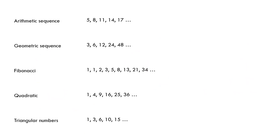Changing topic to sequences. Arithmetic sequences, sometimes called linear sequences, are related to straight lines. An arithmetic sequence increases or decreases by the same amount each time. Looking at this particular sequence, the term-to-term rule is to add on three. We can also find an nth term rule, sometimes called a position-to-term rule.